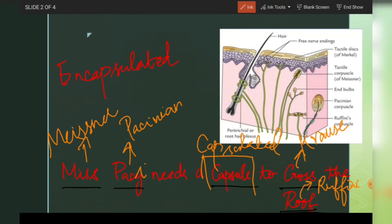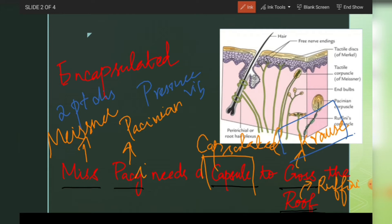Meissner's corpuscle is for two-point discrimination. Pacinian corpuscle is for pressure and vibration. Krause end-bulbs are present at the neurocutaneous junction. Ruffini endings are stretch receptors.